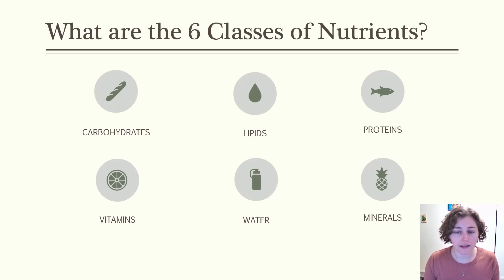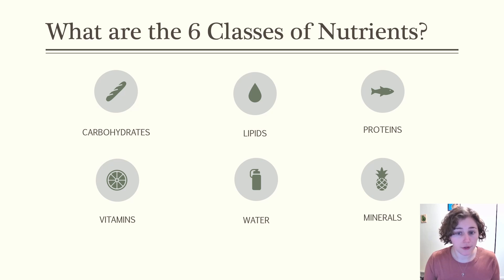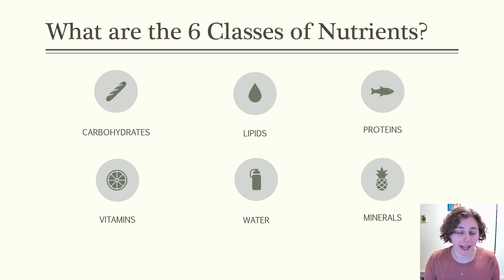The six classes of nutrients refers to carbohydrates, lipids, proteins, vitamins, minerals, and water. Nutrients are defined as essential substances needed for health that our body either cannot make or cannot make in large enough quantities to support health.